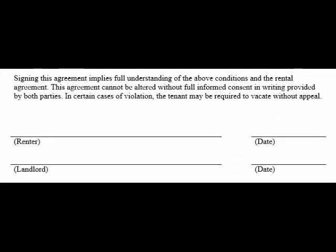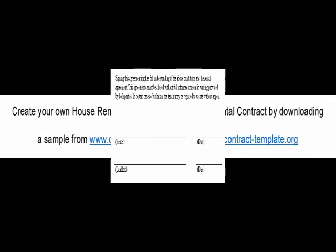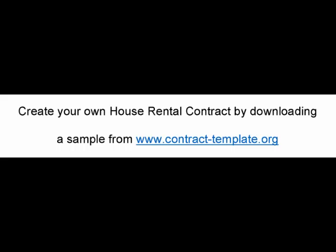The house rental contract protects the rights of the client as well as that of the owner of the house. It conveys to each party what may be required by them in order to proceed smoothly in their pursuit. The contract serves as a binding between them. Create your own house rental contract by downloading a sample from www.contract-template.org.